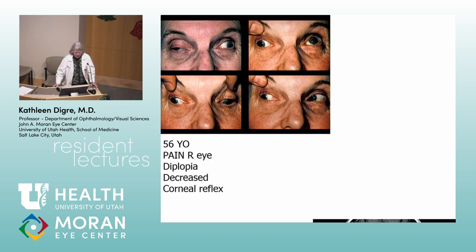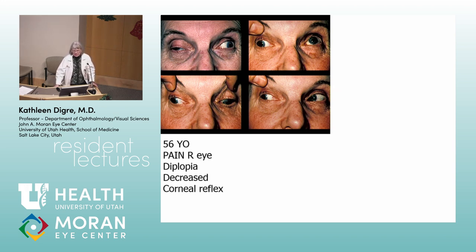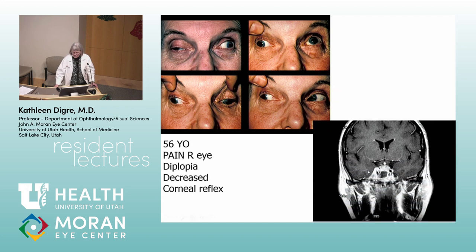This guy came in with a painful ophthalmoplegia on the right side, diplopia, and a decreased corneal reflex. He has almost a complete third nerve palsy — lid totally down, can't adduct, can't look down. He had numbness and loss of the corneal reflex, which took it out of just a third nerve palsy. On his scan, there's a widened cavernous sinus on the right side. This ended up being small cell cancer with a lung primary tumor. These Tolosa-Hunt presentations can harbor very nasty underlying diagnoses.